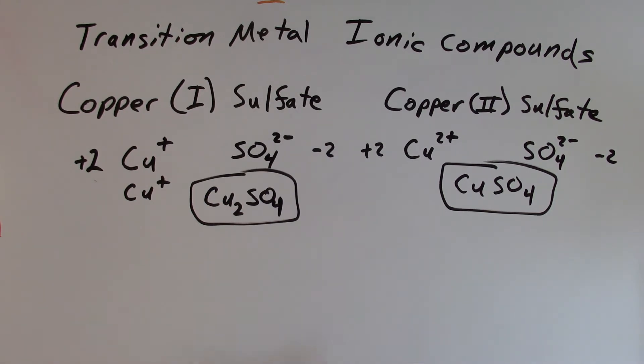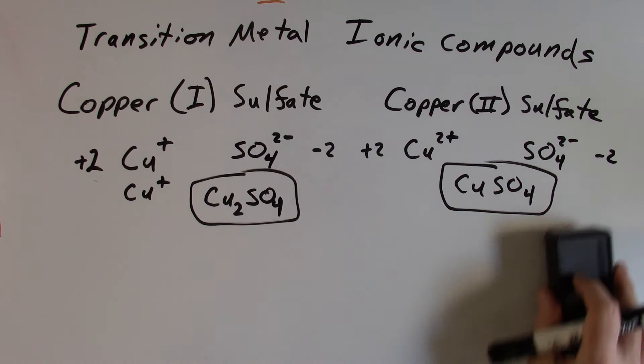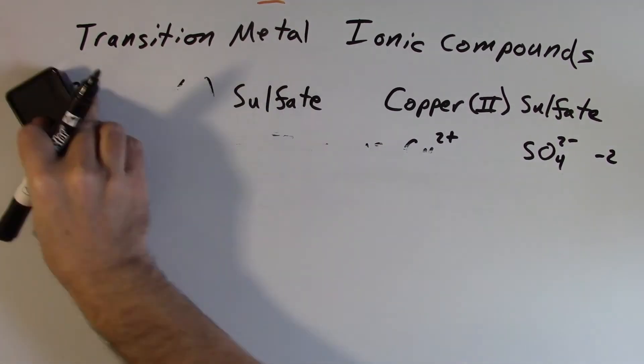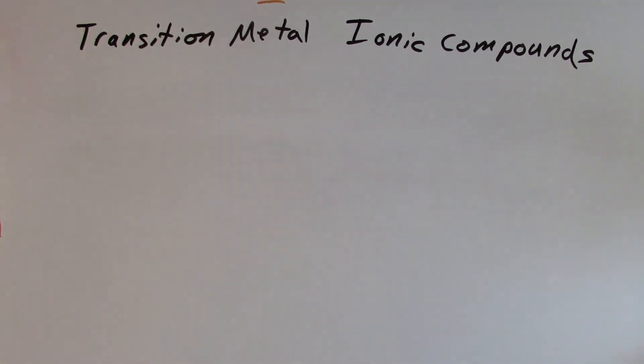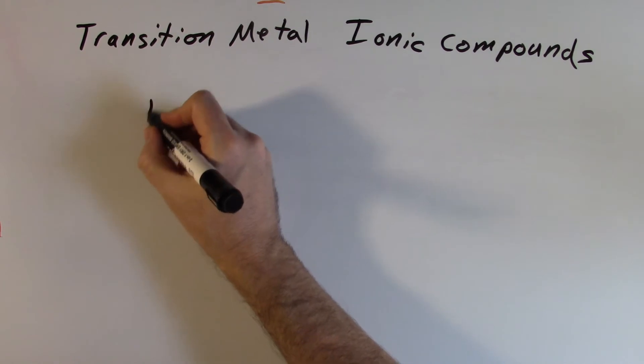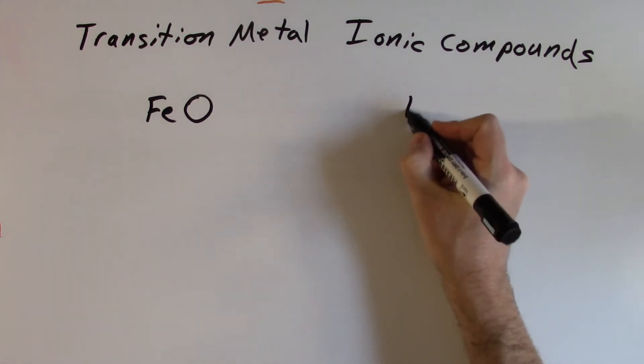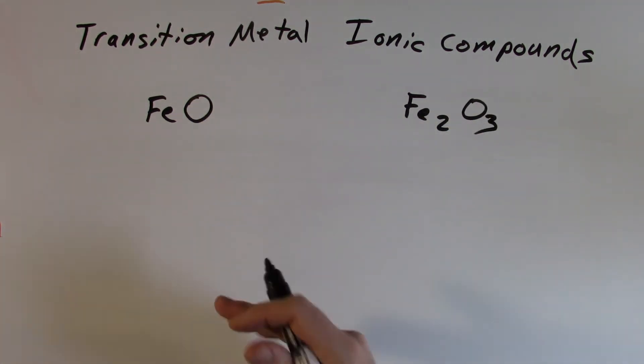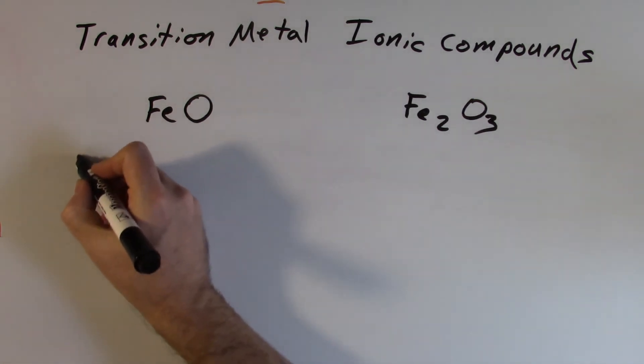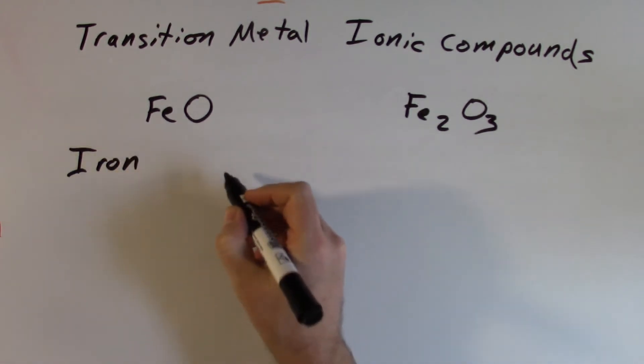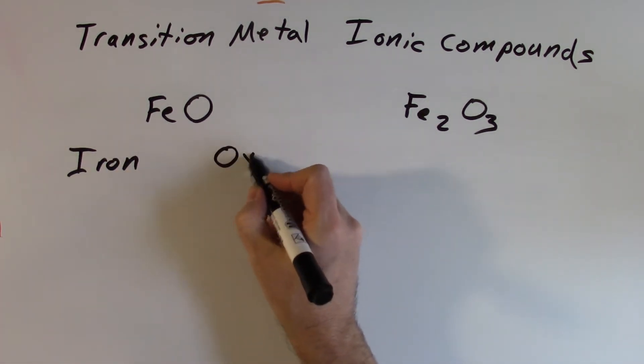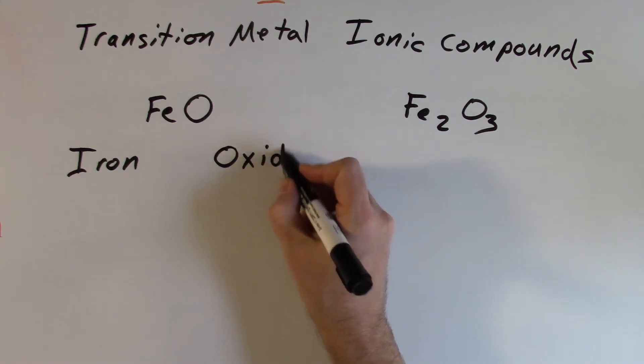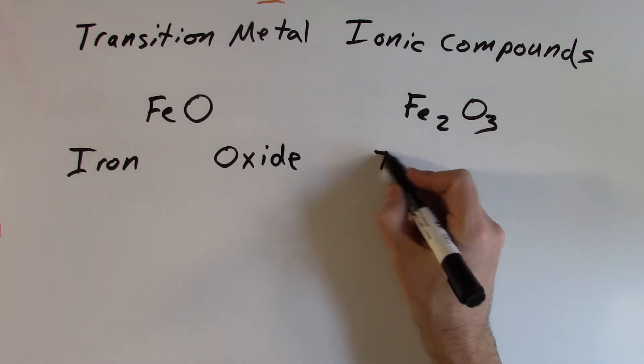And so it's a little tougher then to go the other direction. If we want to go from the formula to the name, let's take a look at FeO and Fe2O3. So two different iron compounds. Both of these are iron oxide. Again, if we use the same rules for naming ionic compounds, we name the metal first, or the cation first, iron, and the anion, in this case the nonmetal, it's going to have that IDE ending on it, so oxide there. This one's also iron oxide.